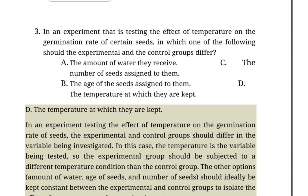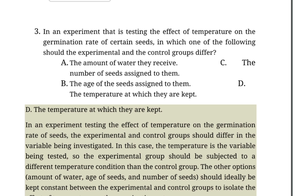In an experiment testing the effect of temperature on the germination rate of certain seeds, in which one of the following should the experimental and control groups differ? A. The amount of water they receive. B. The age of the seeds assigned to them. C. The number of seeds assigned to them.